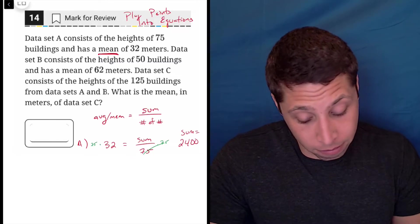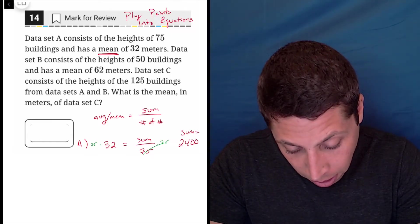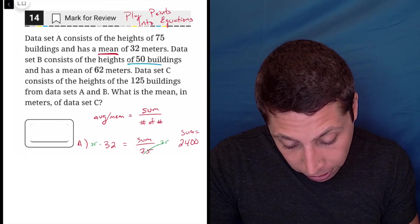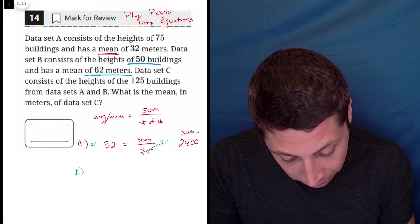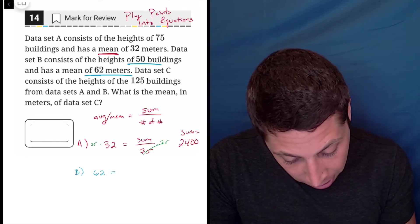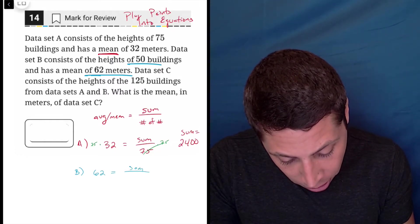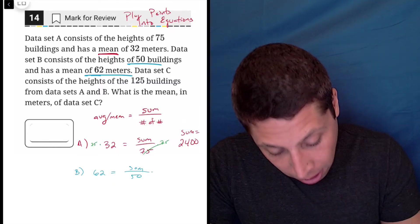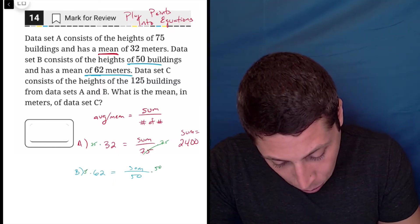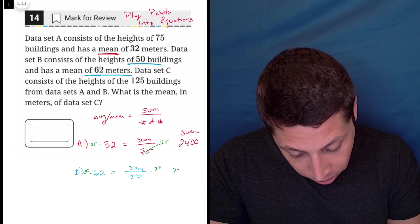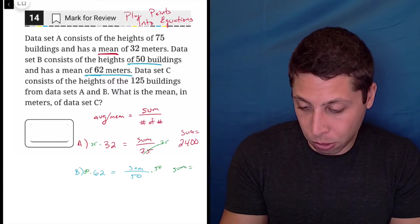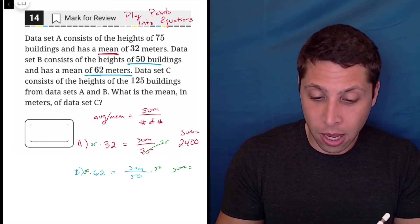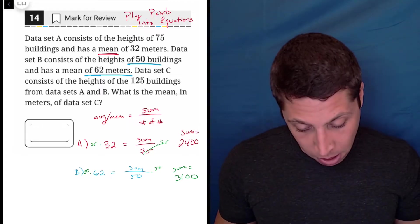How does that help me? I don't know, but they gave me another set of data. Dataset B consists of heights of 50 buildings with a mean of 62. So let's just use the same formula. So 62 is the mean and the sum is still unknown, but now it's 50 buildings. Same process - let's solve for the sum because we can, and we'll worry about why that was helpful later. So this time the sum is 62 times 50, which is 3,100.